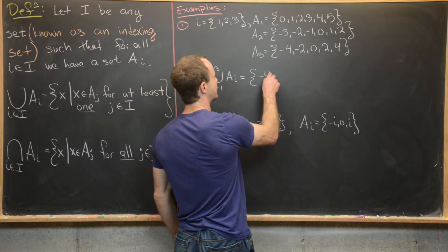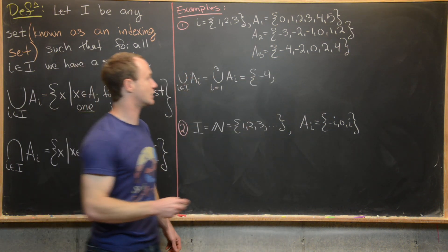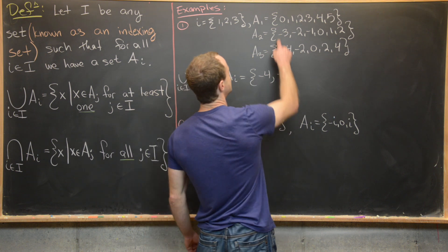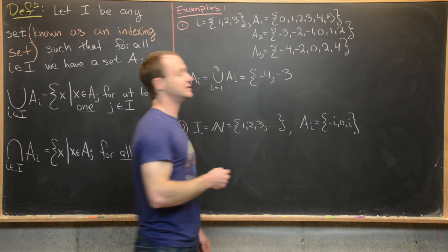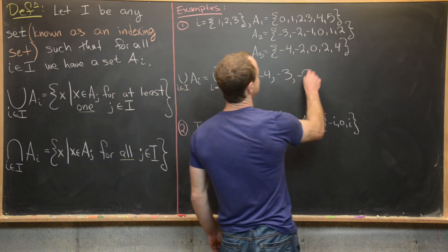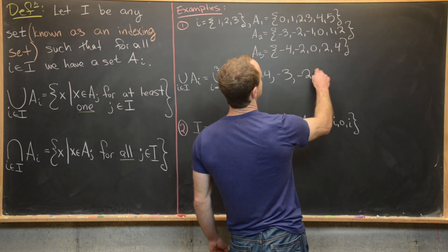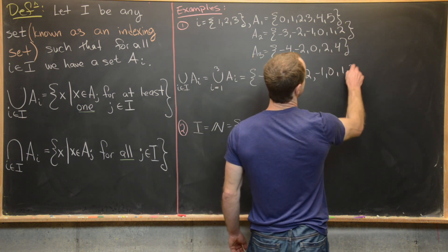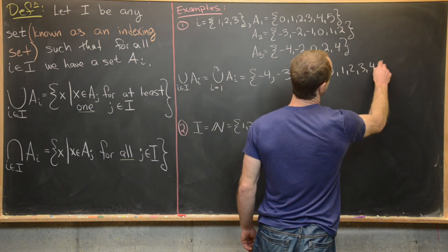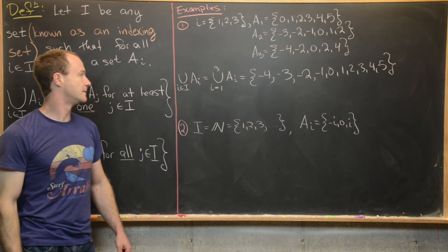So -4 is in A_3, so that's in at least one of them. -3 is in A_2, so that's in at least one of them. -2 is in a couple of them. Then -1, 0, 1, 2, 3, 4, 5. So the union is {-4, -3, -2, -1, 0, 1, 2, 3, 4, 5}.